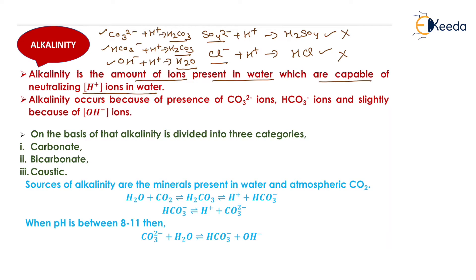Alkalinity occurs because of the presence of carbonate, bicarbonate, and slightly because of OH⁻ ions. Based on this, alkalinity is classified into three types: carbonate (CO₃²⁻), bicarbonate (HCO₃⁻), and caustic (OH⁻) alkalinity.